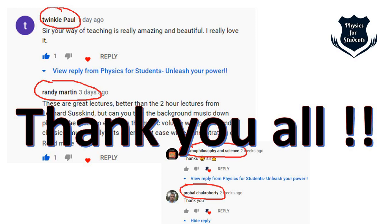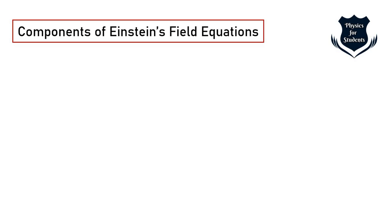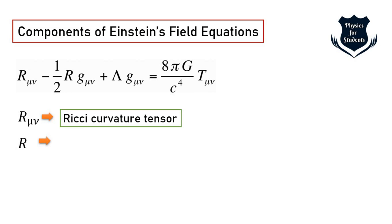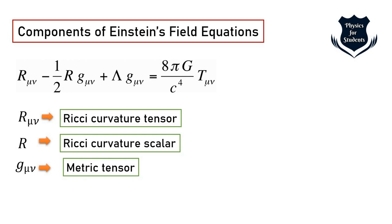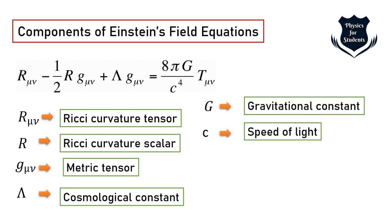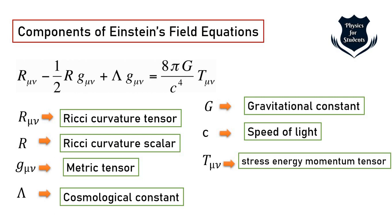We'll be dealing primarily with the components of Einstein's Field Equations. As you can see, this is the expanded form. We'll start with R_μν, the Ricci curvature tensor, then the Ricci scalar R, the metric tensor G_μν, the cosmological constant Λ, Newton's gravitational constant G, the speed of light c, and T_μν the stress-energy momentum tensor. The metric tensor, gravitational constant, speed of light, and the 8πG factor will be covered in coming videos.